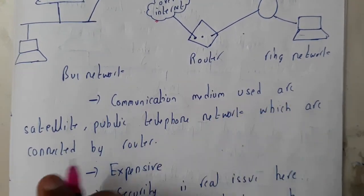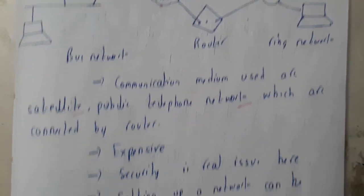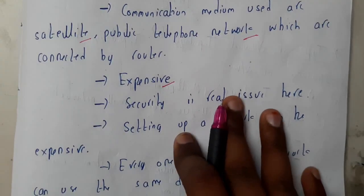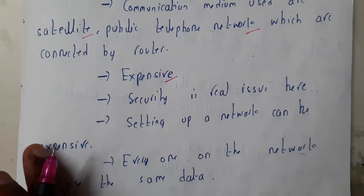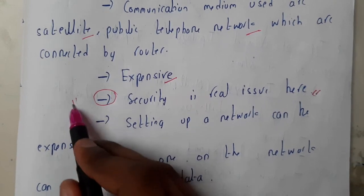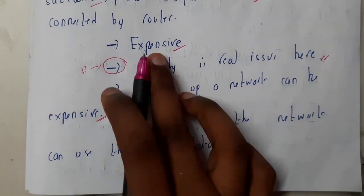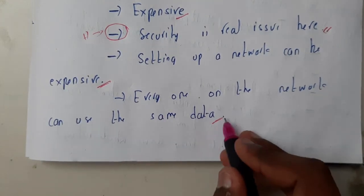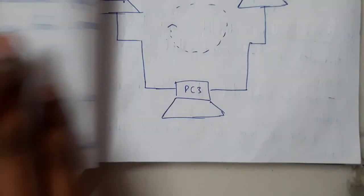The major drawbacks of WAN are that it is really expensive and its security level is really low compared to LAN and MAN. This low security is the main reason hackers have come into play. Setting up a new network is really expensive. However, everyone in the network can use the same data.